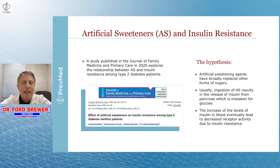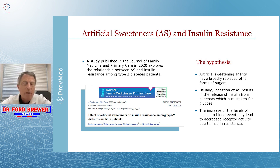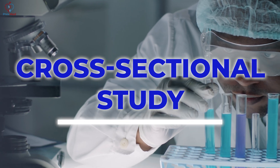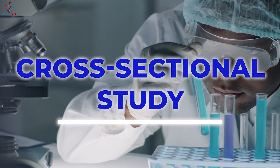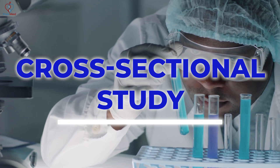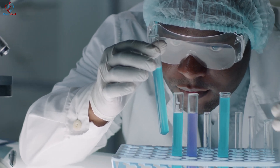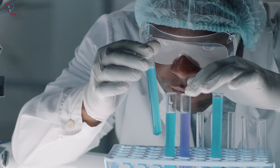The simplest and easiest way to do an artificial sweetener study is to do what's called a cross-sectional study. Cross-sectional means you just take a one-time sample from a large population.